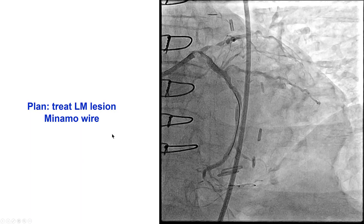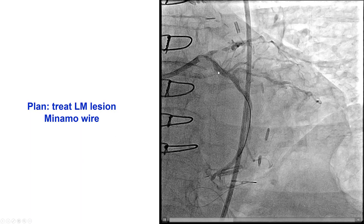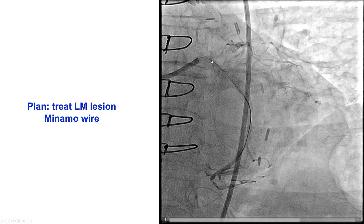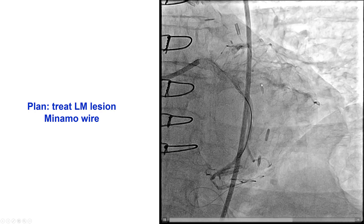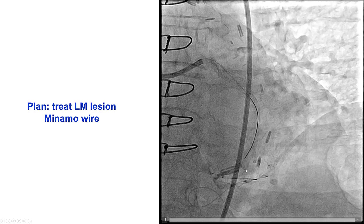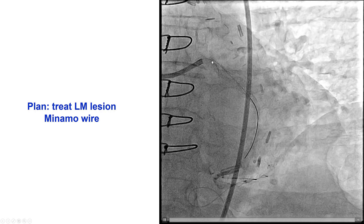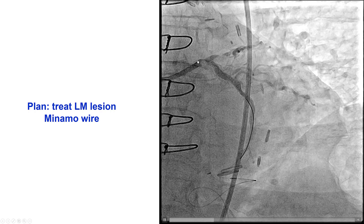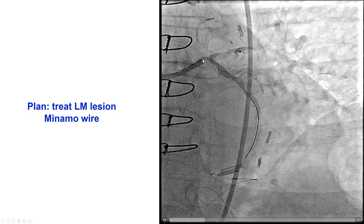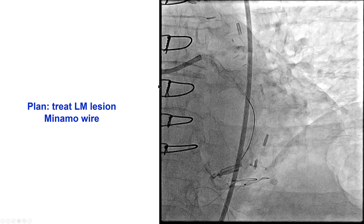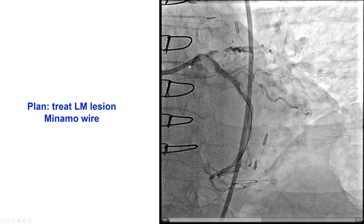However, upon further review of the angiogram, it appeared that a large myocardial territory — the anterior wall, the first and second obtuse marginal, and the left PDA — were all being supplied by the left main, which had a significant lesion. That is why we decided to offer percutaneous coronary intervention.